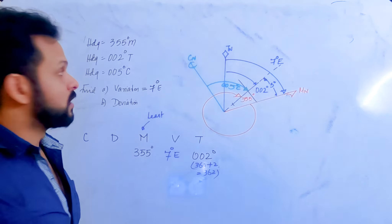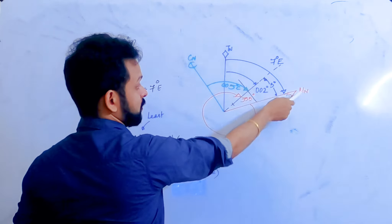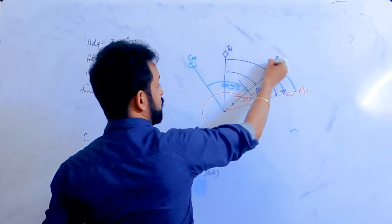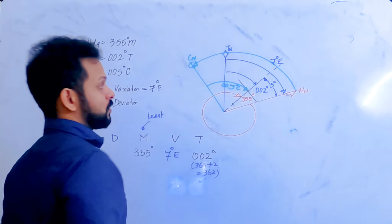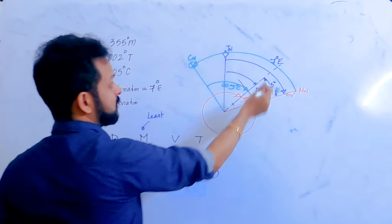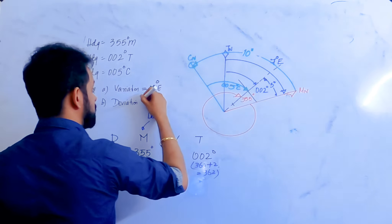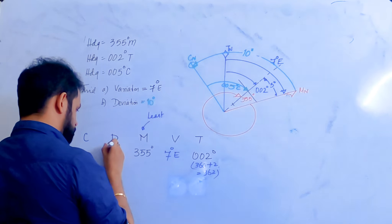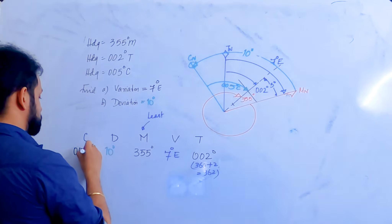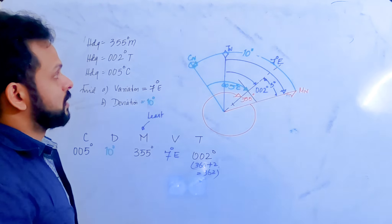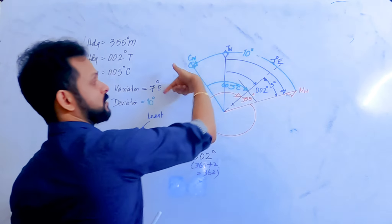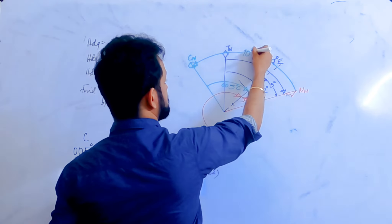Deviation is the angular difference between compass north and magnetic north, measured from the magnetic north towards compass north. This angle is 5° on one side plus another 5° on the other side, giving a total deviation of 10°. The compass north is to the west of magnetic north, so the deviation is 10° West.